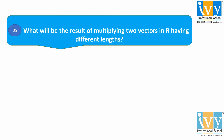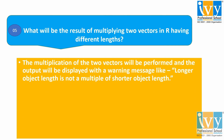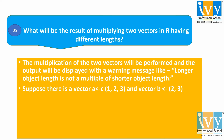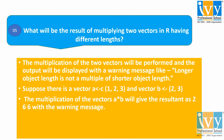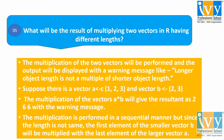Our fifth and last question is: what will be the result of multiplying two vectors in R having different lengths? The multiplication of the two vectors will be performed and the output will be displayed with a warning message: 'longer object length is not a multiple of shorter object length.' For example, suppose vector a equals c(1, 2, 3) and vector b equals c(2, 3). Multiplying a and b gives the result 2, 6, 6 with a warning message, because the multiplication is performed sequentially and the first element of the smaller vector b will be recycled to multiply with the last element of the larger vector a.